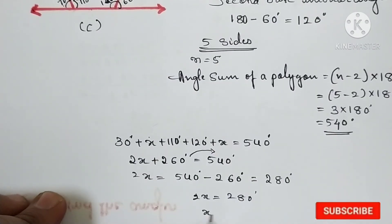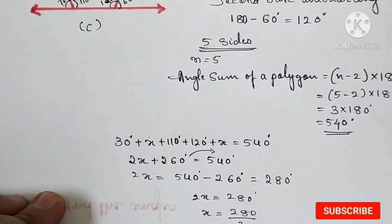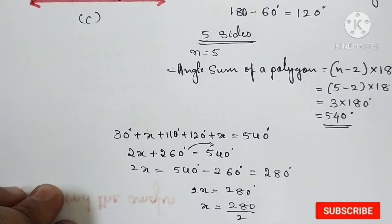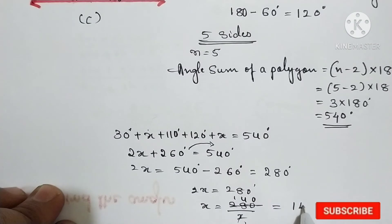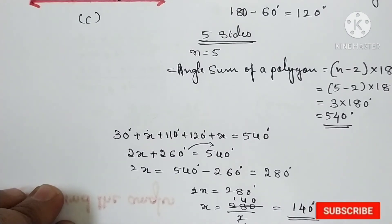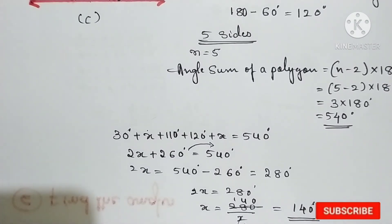So x is equal to 280 divided by 2. That gives us 140 degrees. That means the x value is 140 degrees.